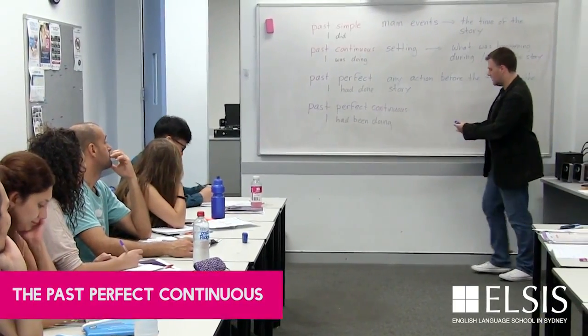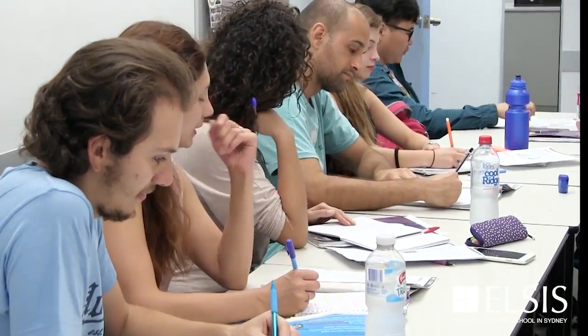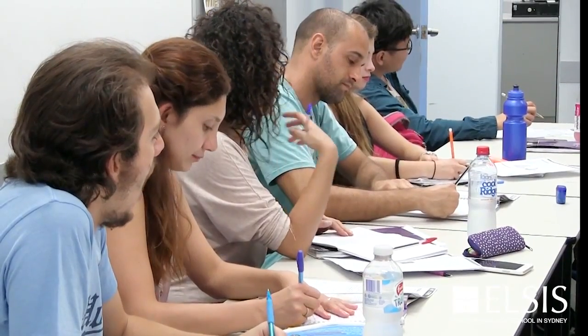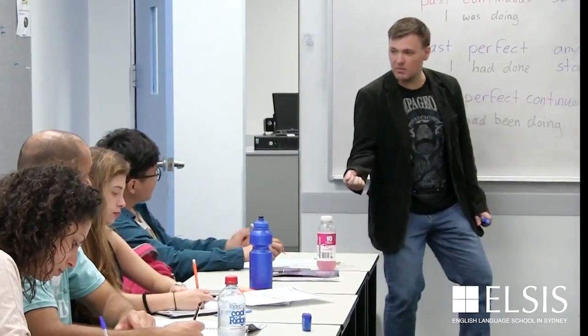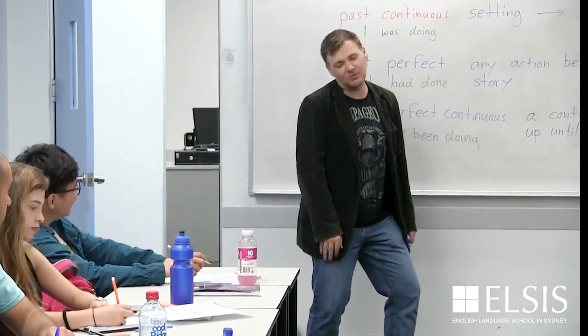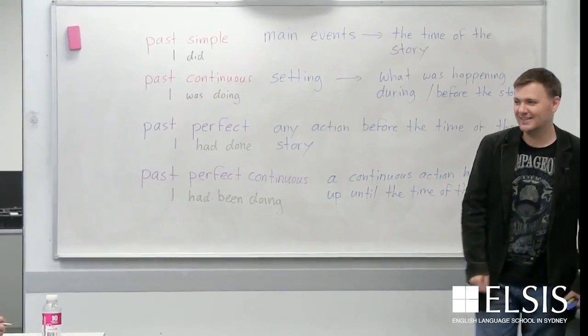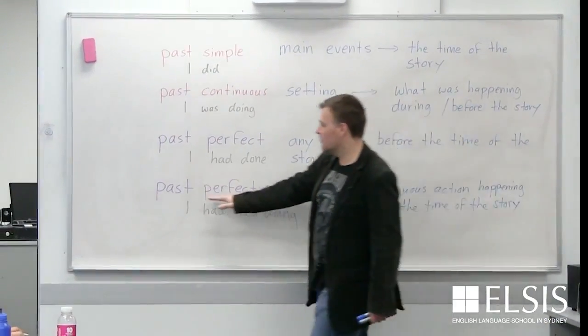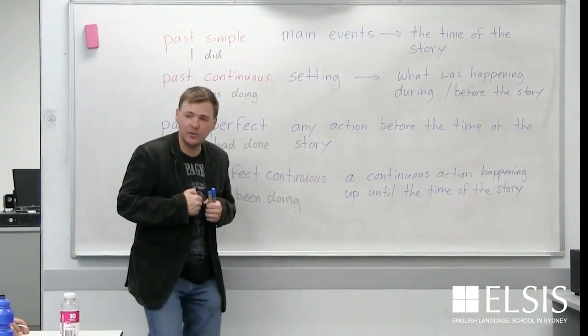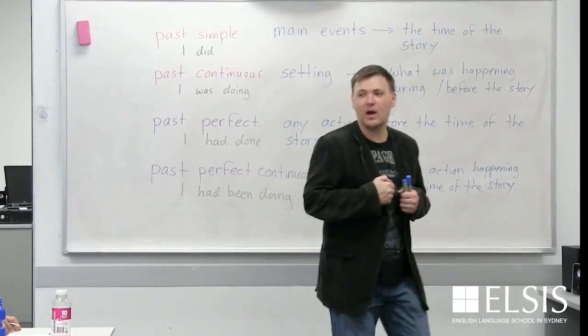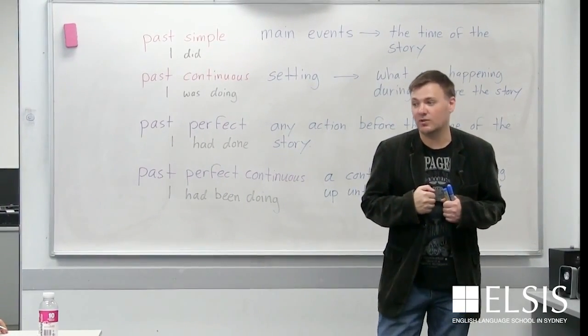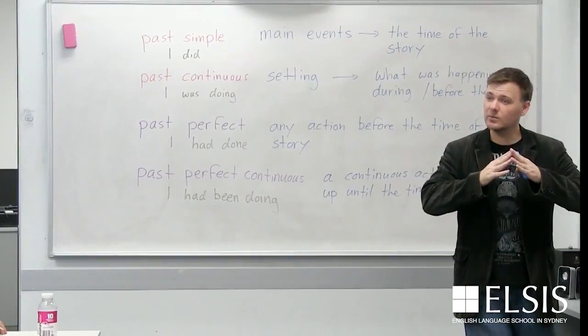Now, the past perfect continuous is the same — a continuous action happening up until the time of the story. It's different to the past continuous, because the past continuous can continue after the story. 'I was traveling on the train, and a man said, hey, give me your money.' And then I continued traveling on the train and got off. But the past perfect continuous — the story we did yesterday: 'We had been hiking in the forest for hours, and we were very tired, so we decided to stop and camp for the evening.'